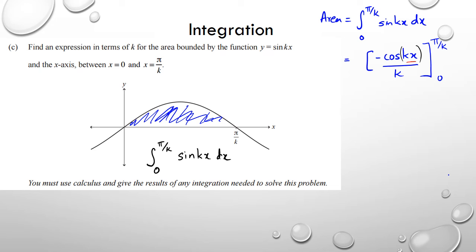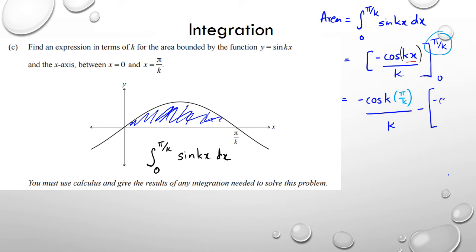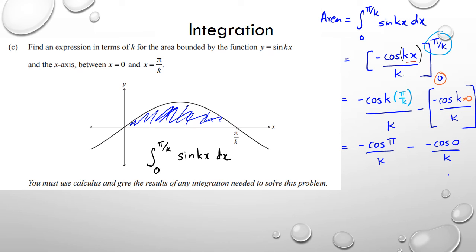Now substituting the limits: I substitute x = π/k first, giving negative cos(k times π/k) over k, which is negative cos(π) over k. Then subtracting the result at x = 0: negative cos(k times 0) over k, which is negative cos(0) over k.